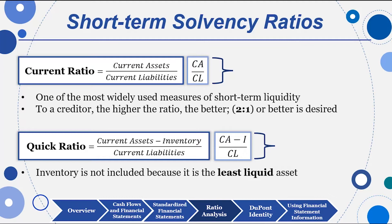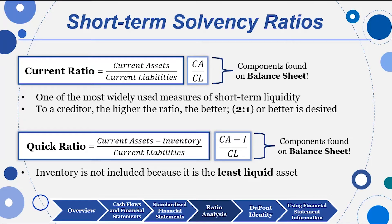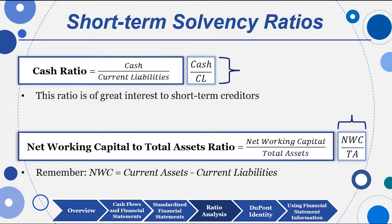The quick ratio is the same as the current ratio, but subtracting inventory because inventory is not very liquid. In a company with little inventory, the quick ratio and current ratio will be about the same value. In a company with lots of inventory, we'll be subtracting a larger number in the numerator and will see significant variance between the two. Both are very important — especially the quick ratio if your company has lots of inventory.